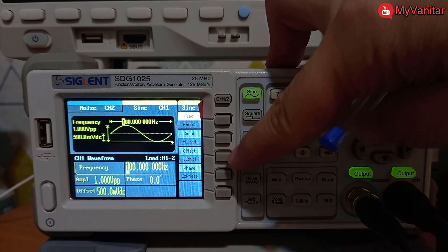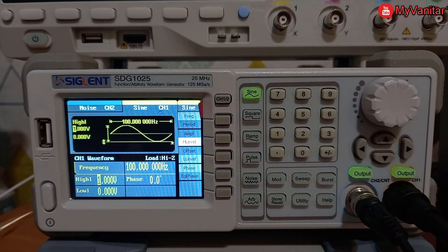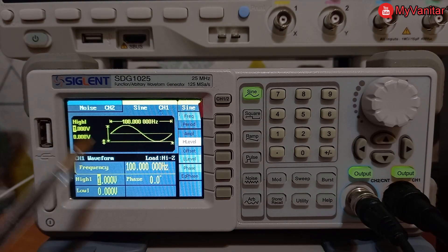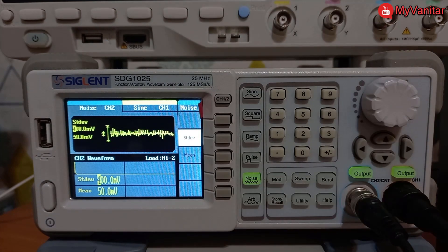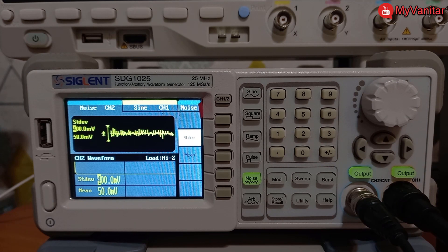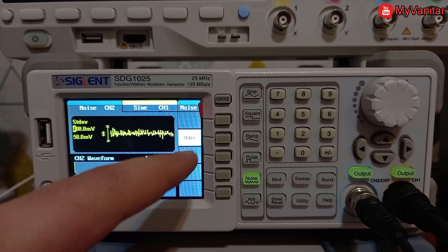Anyway, this is channel one. As it says, it starts from zero to one volt sine wave, 100 hertz. And this is channel two, which generates some random white noise with these values.